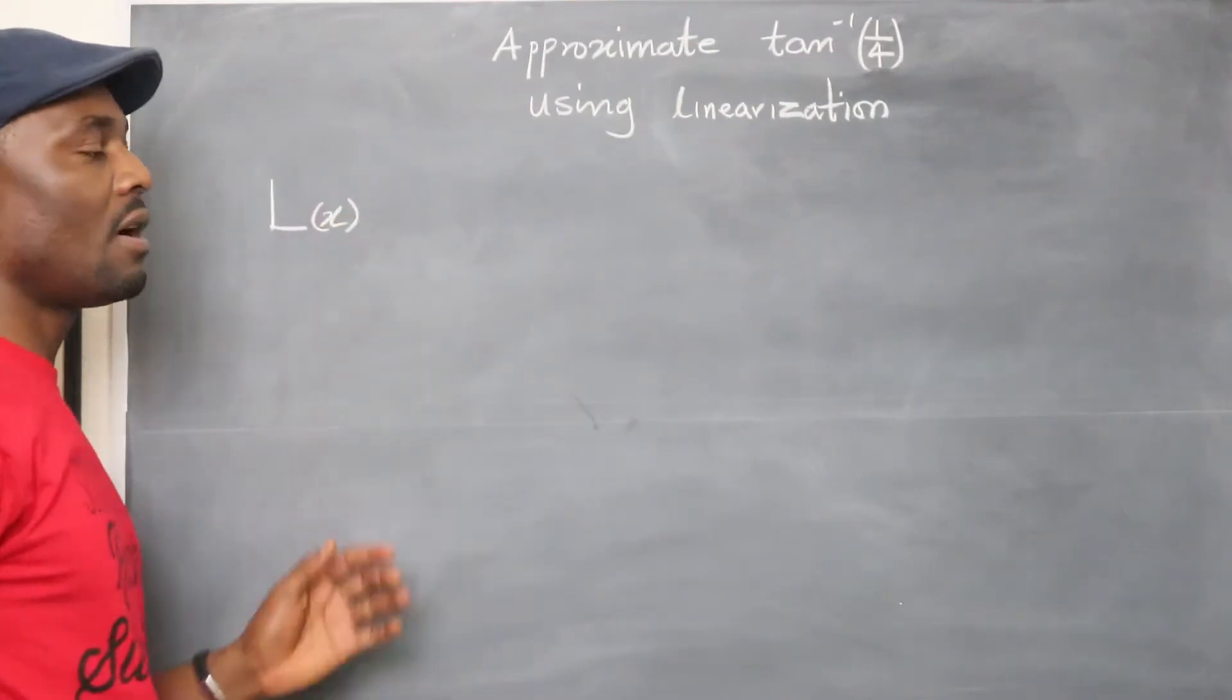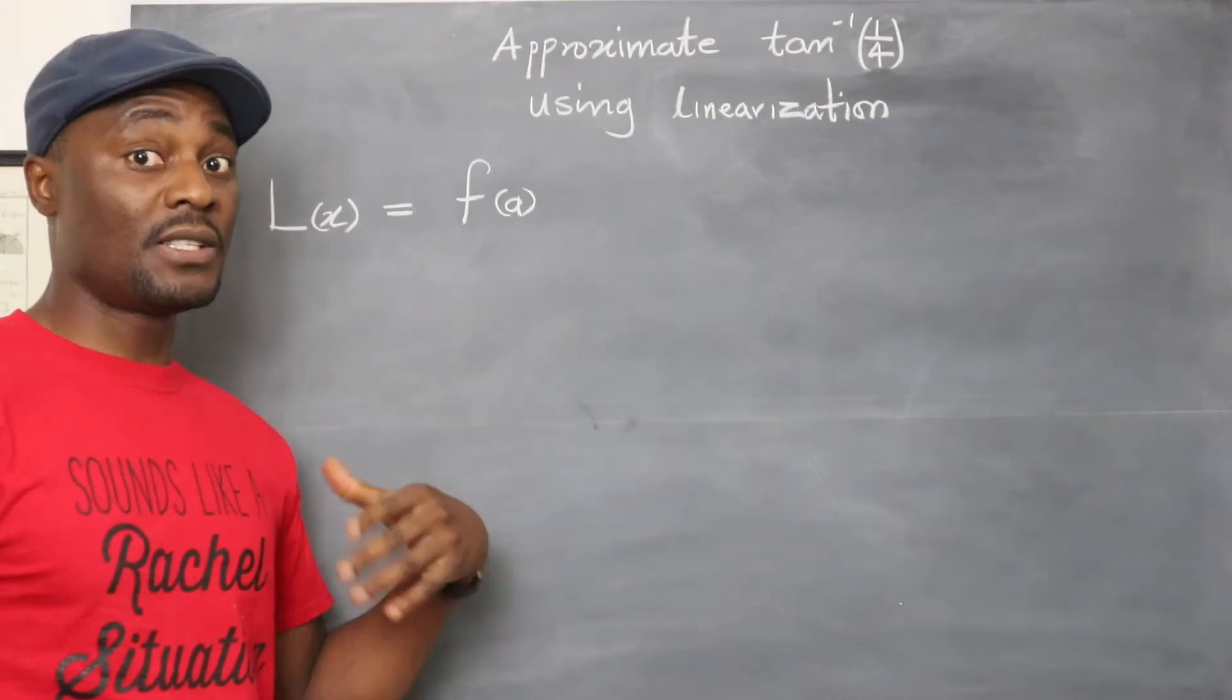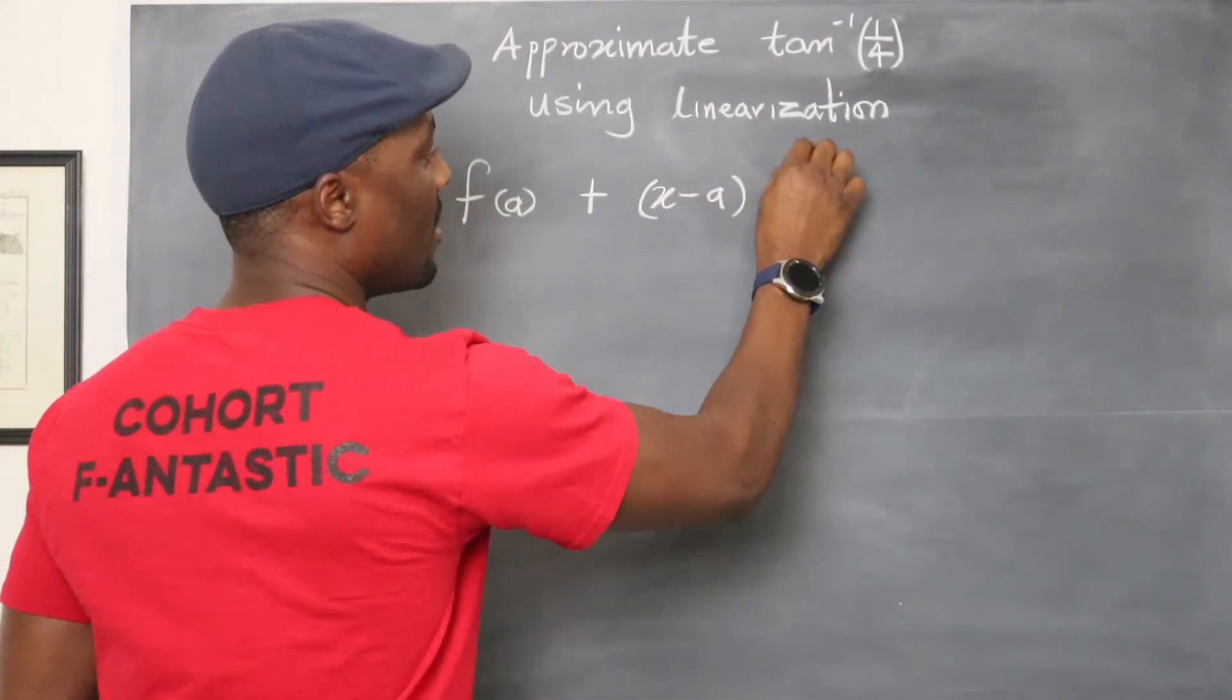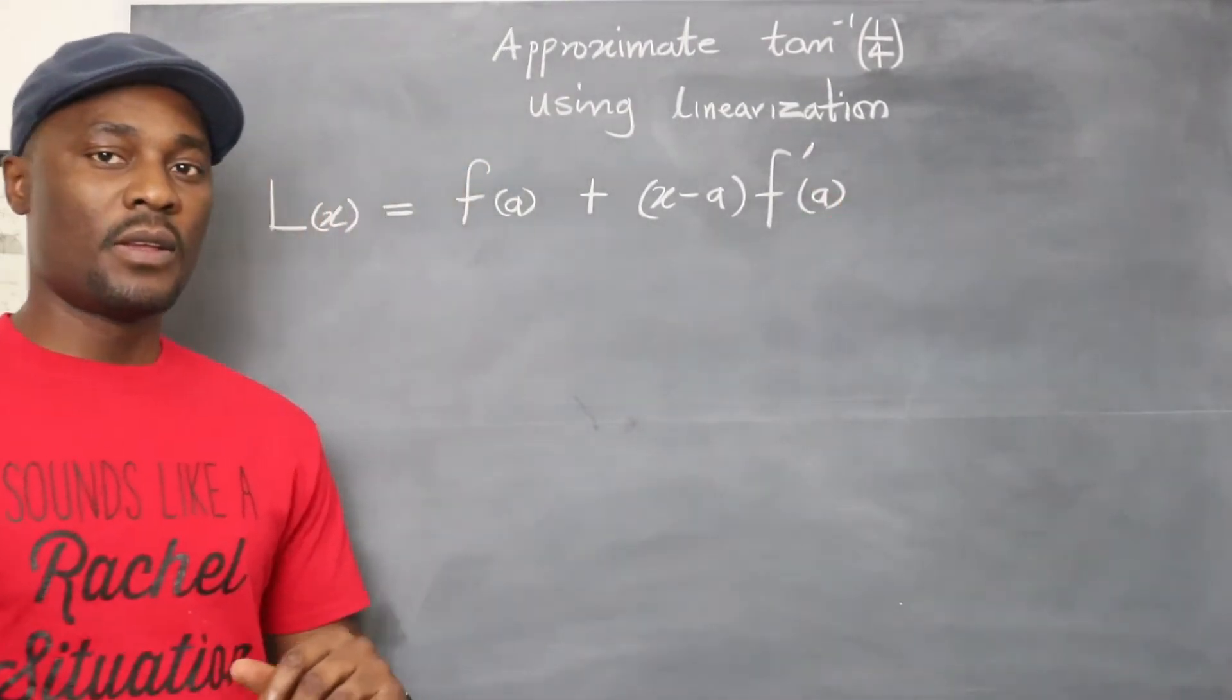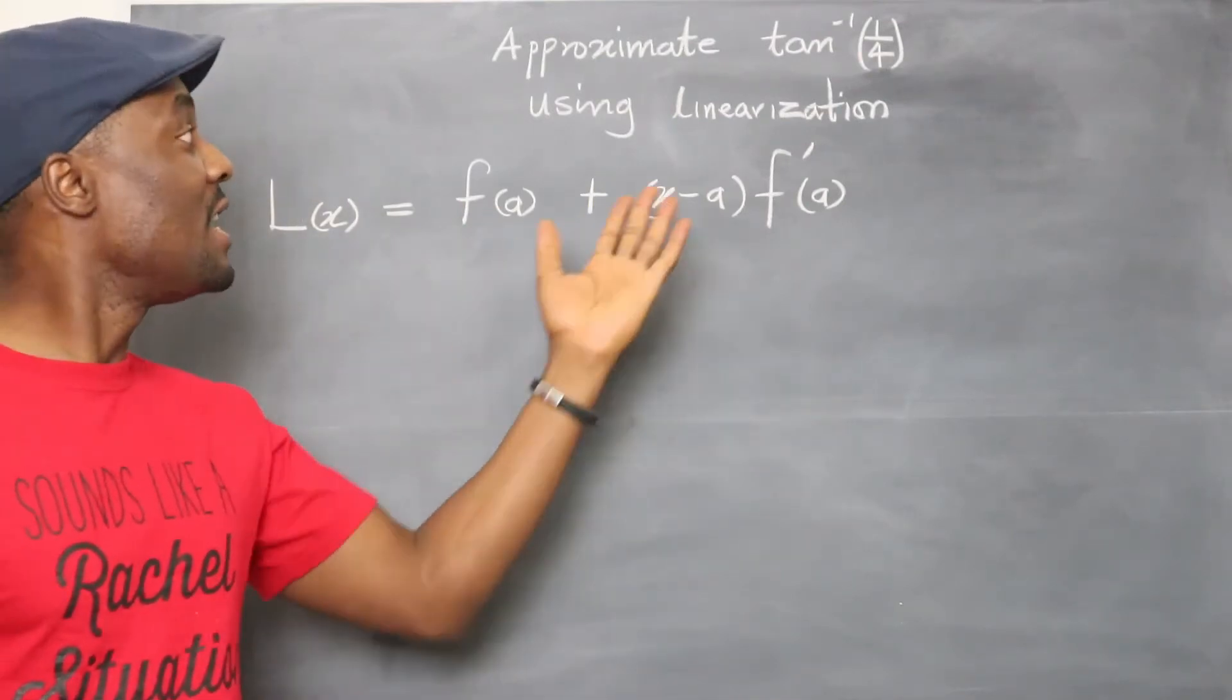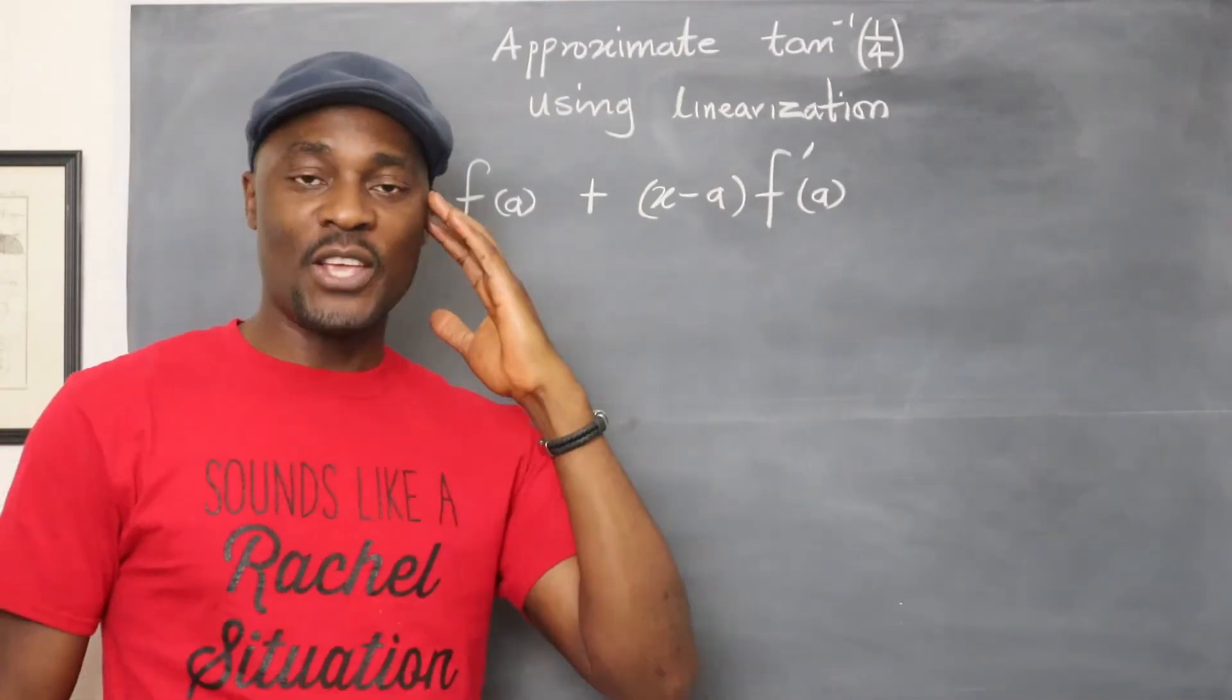The linearization of a function is equal to the value of that function at a certain point that is convenient for you, which is f(a) plus (x minus a) times f'(a), the value of the derivative of that function at that same convenient point that you choose. So this a is actually a number you choose that you know works well. You have to choose the number. That's why I said you'll use common sense.